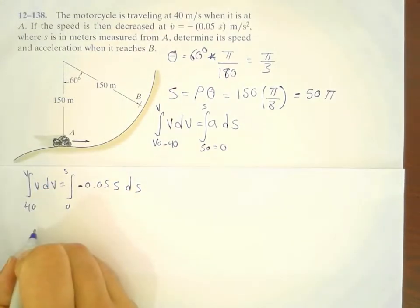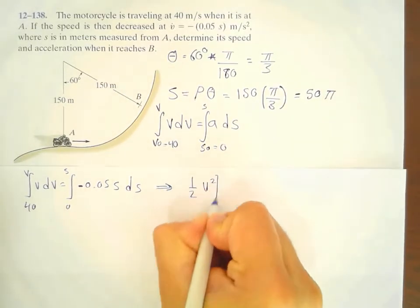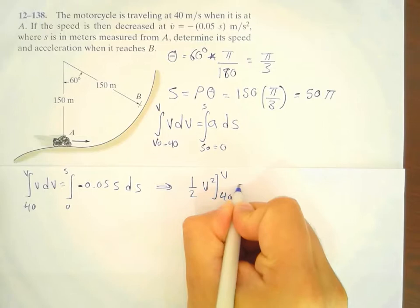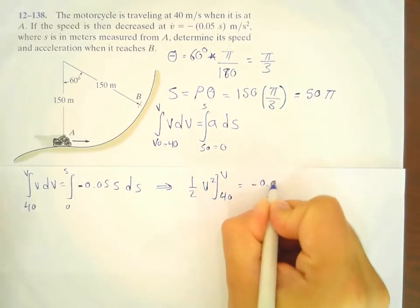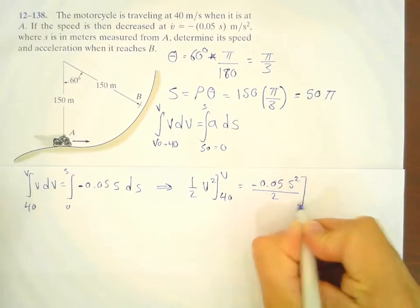Integrating both sides would give us half V squared from 40 to V, and this equals to minus 0.05 S squared over 2 from 0 to S.